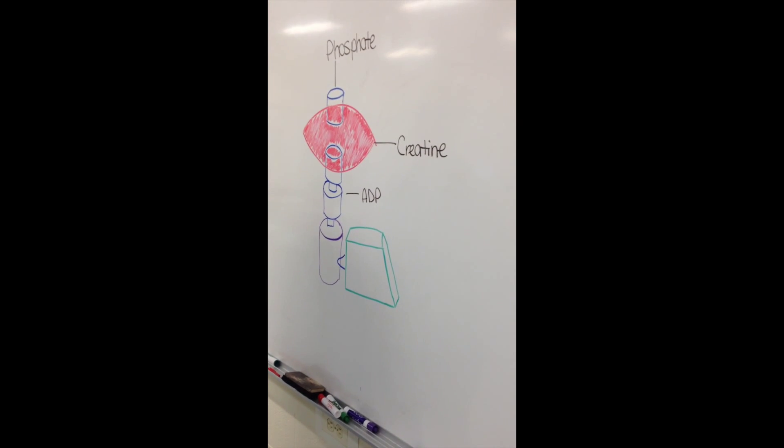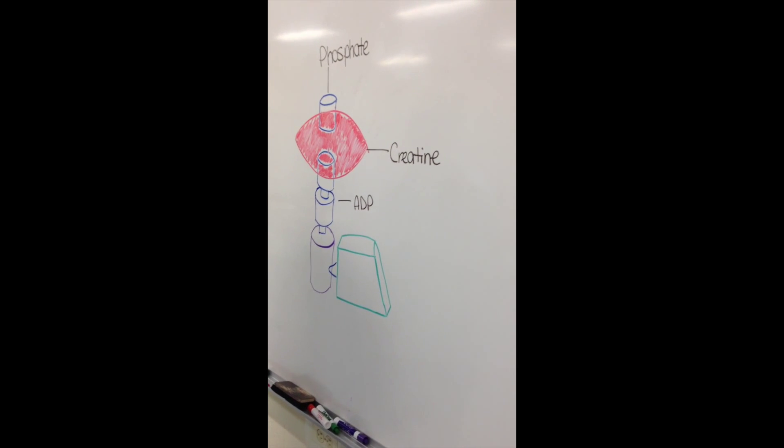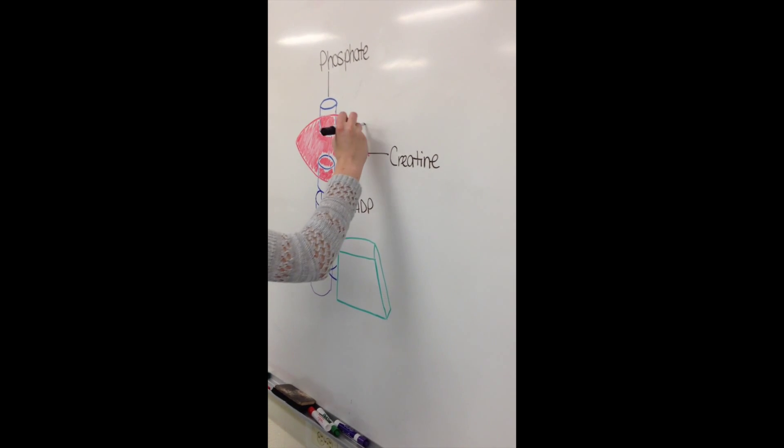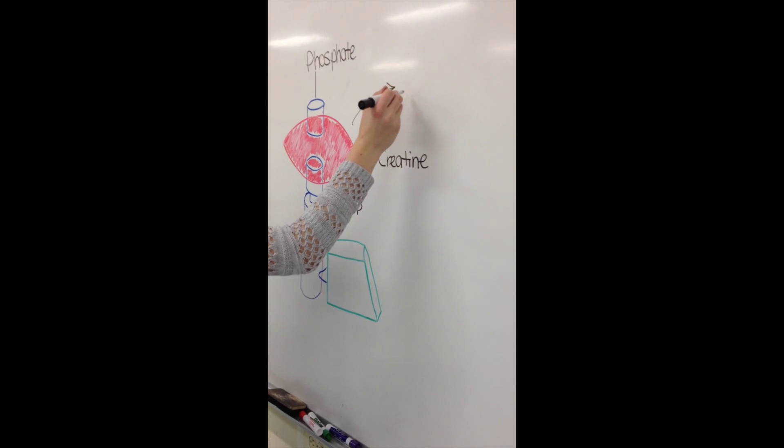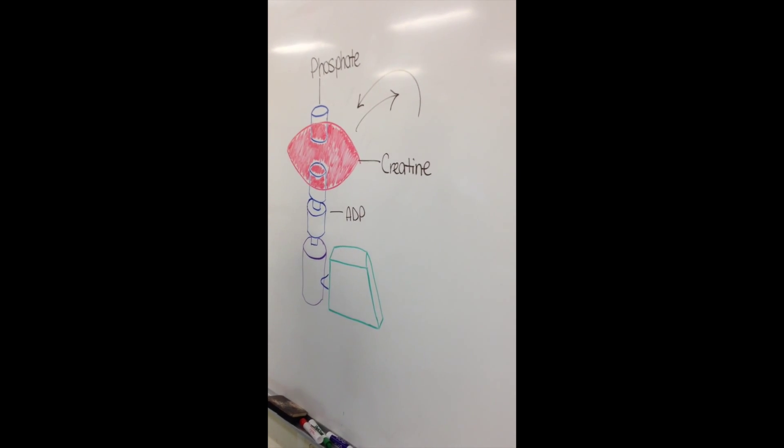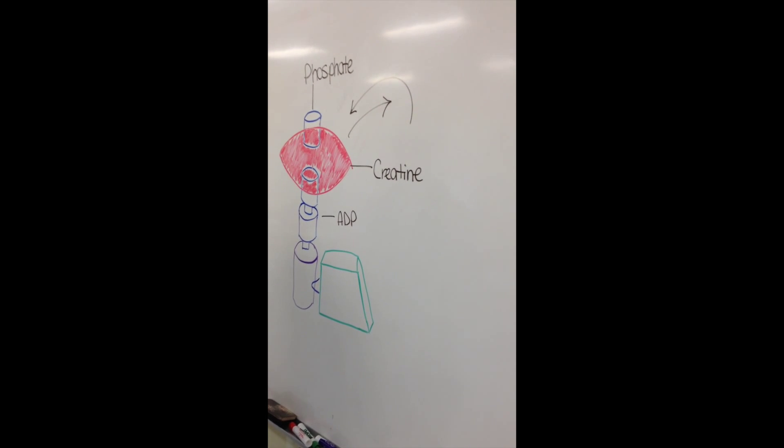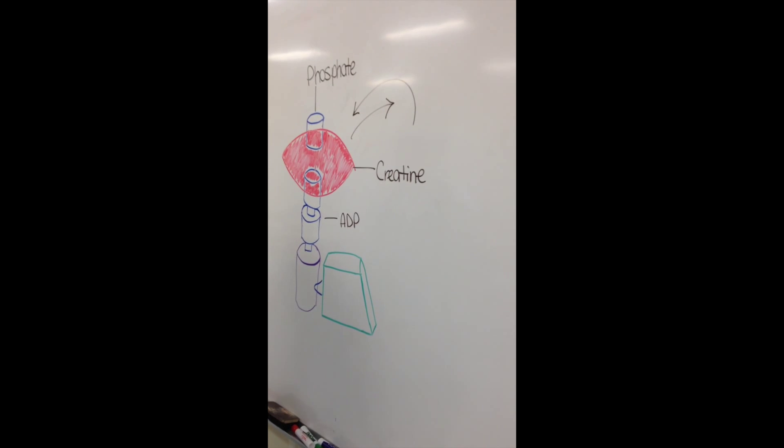Like ATP, phosphate creatine is a high energy molecule where the phosphate can be broken off easily and can be used to convert ADP back to ATP. This small reservoir of creatine phosphate within the muscle can sustain the level of ATP required during the initial phase of short but intense activity.